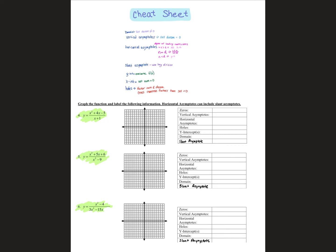Tomorrow's quiz is going to look similar to this. You're going to have one problem where you have to do everything — find all the stuff and graph it. The rest of the questions are like: here's a rational, find the zeros, find the roots, find the solutions, find the x-intercepts; here's a rational, find the domain; here's a rational, find the horizontal asymptote. That sort of stuff — very specific questions.